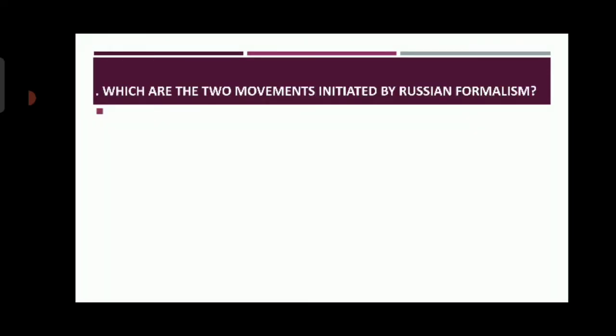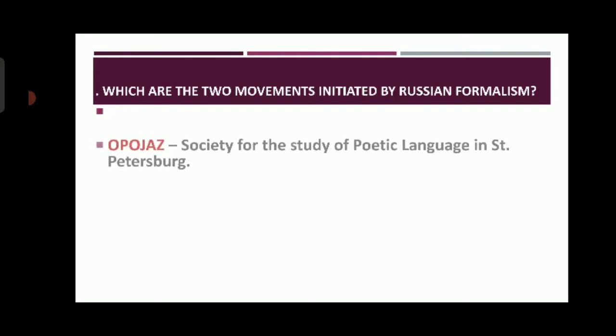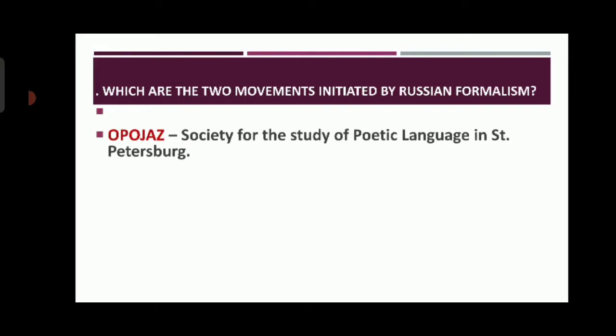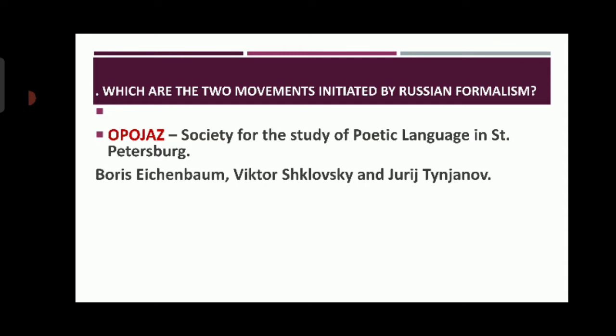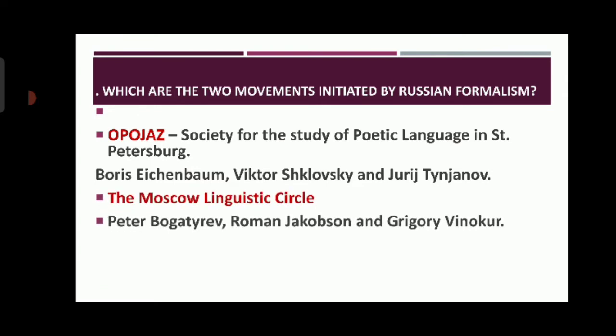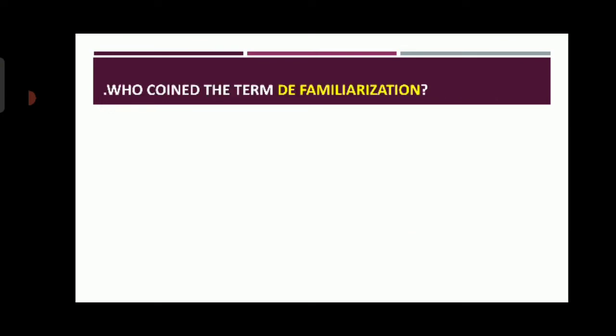The next question: which are the two movements initiated by Russian formalism? The first one is OPOYAZ — an acronym for a Russian phrase meaning the Society for the Study of Poetic Language in St. Petersburg. Its main exponents are Boris Eichenbaum, Viktor Shklovsky, and Yuri Tynyanov. The second is the Moscow Linguistic Circle, whose main proponents are Pyotr Bogatyrev, Roman Jakobson, and Grigory Vinokur.